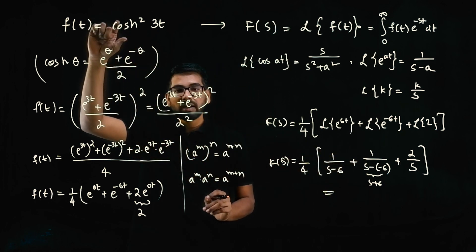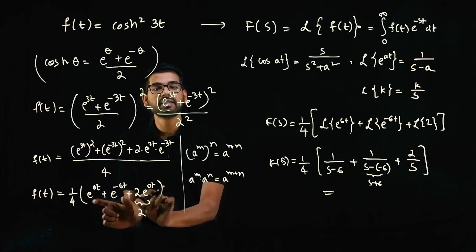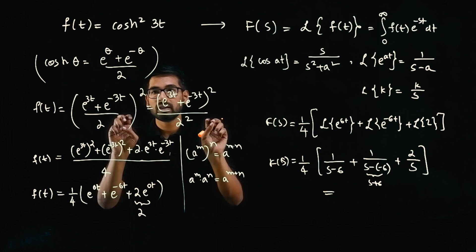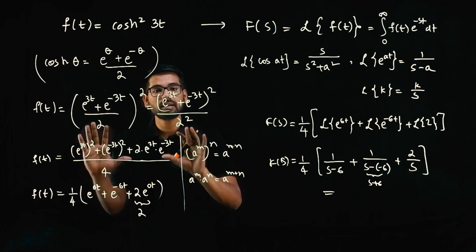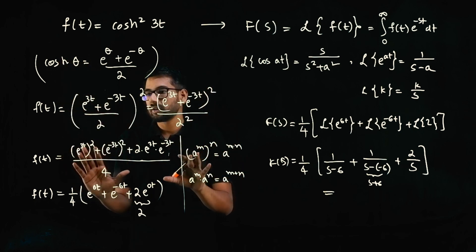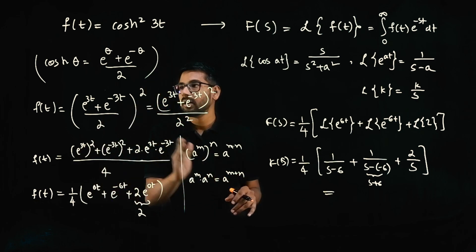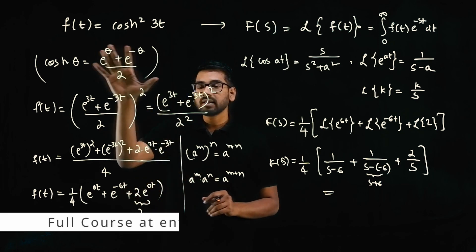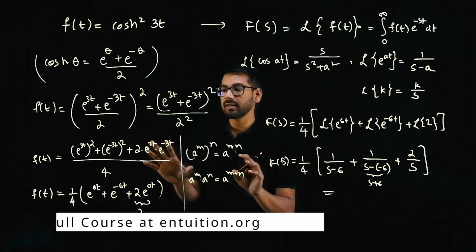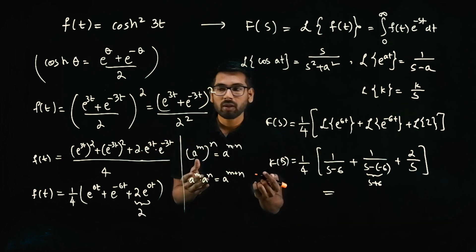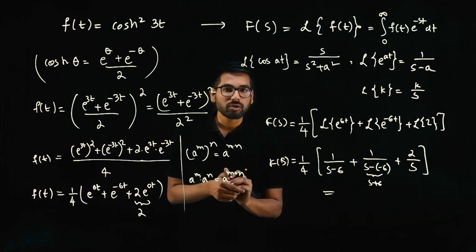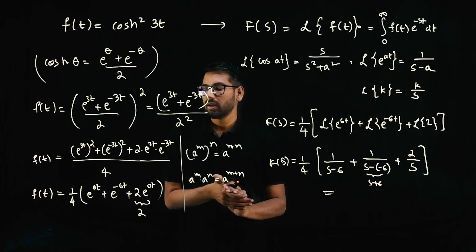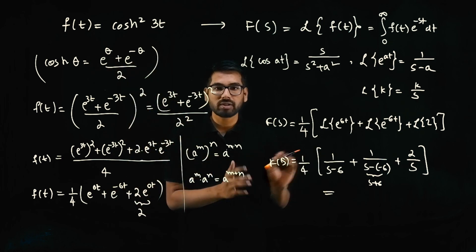The key skill is transforming or simplifying the given function into a sum of basic functions. That requires the prerequisites: (a+b)² expansion, laws of exponents, and the identity cosh(θ) = (e^θ + e^(−θ))/2. Laplace transform itself is easy — just recall the formula and apply it. Only three steps are needed for every question.